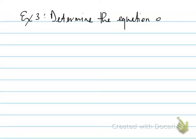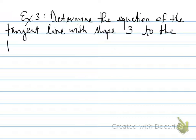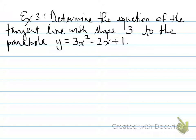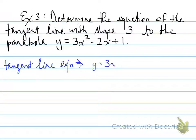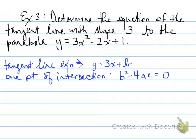Example three. Determine the equation of the tangent line with slope 3 to the parabola y equals 3x squared minus 2x plus 1. We need a line with slope 3 that intersects the parabola at one point. The tangent line equation is y equals 3x plus b, where b is the y-intercept. Since it meets at one point, the discriminant b squared minus 4ac equals 0. Note these two b's are different and should be distinguished.